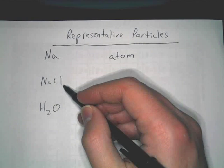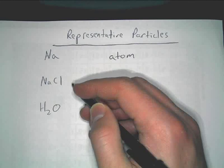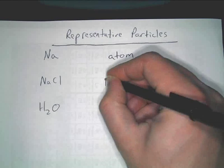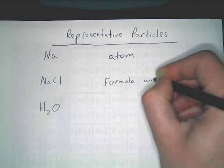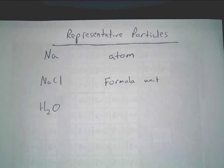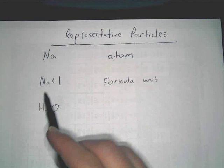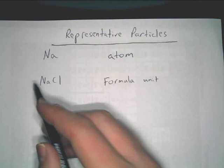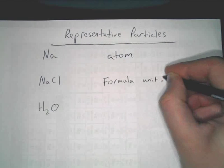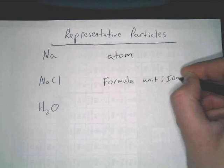You want to say compound maybe for both of them, but we need to be more specific. This is what we are going to call a formula unit. So the representative particle for something like this would be formula unit. The formula unit is when you have an ionic compound. This is ionic. Ionic compound.